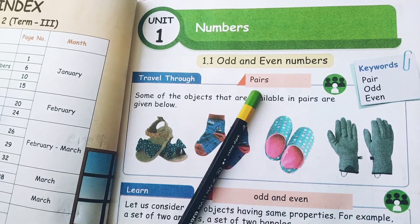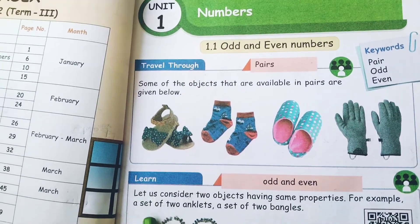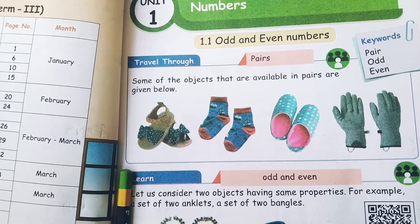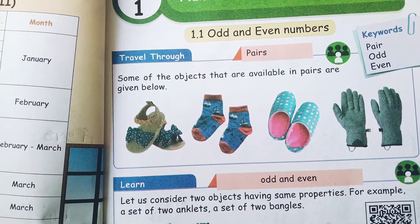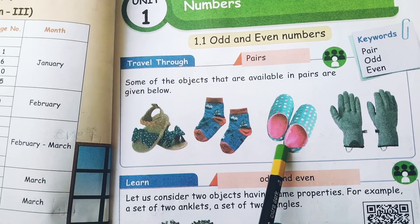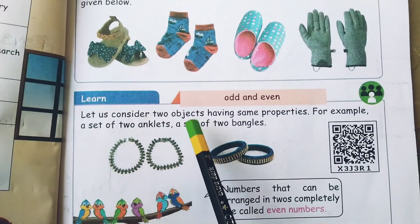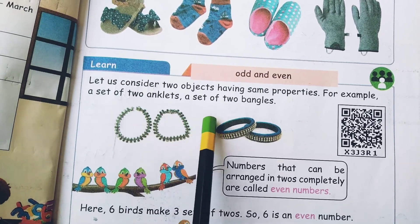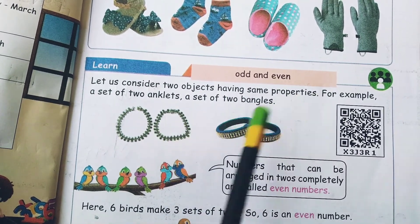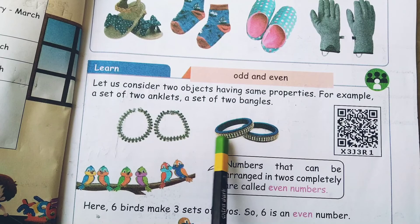Some of the objects that are available in pairs are shown. In this picture there are 2 pairs of sandals, 1 pair of socks, 1 pair of shoes, and 1 pair of gloves. Let us consider 2 objects having some properties — for example, a set of 2 ankles and a set of 2 bangles.